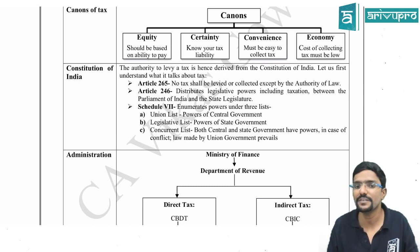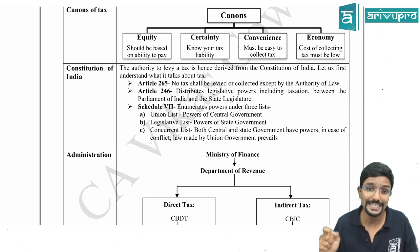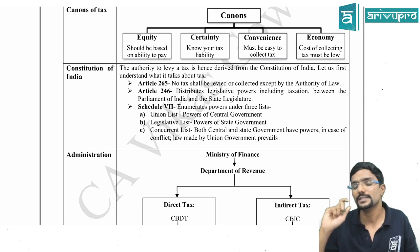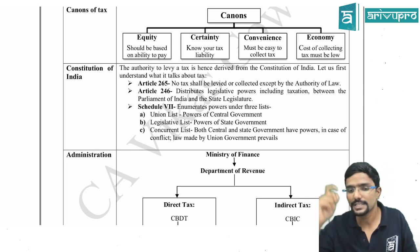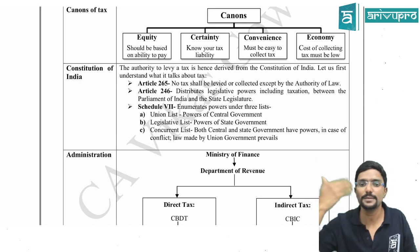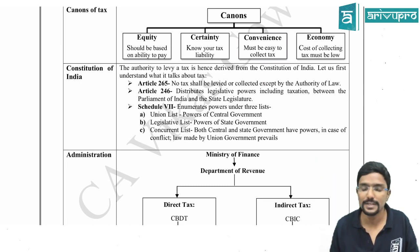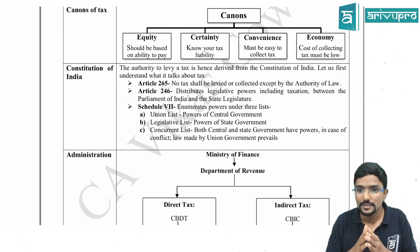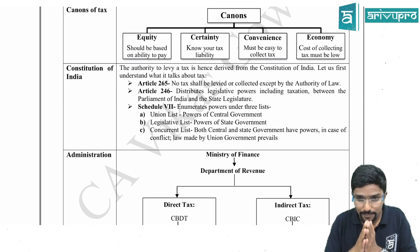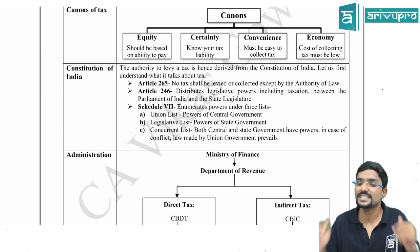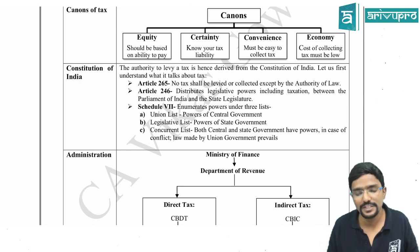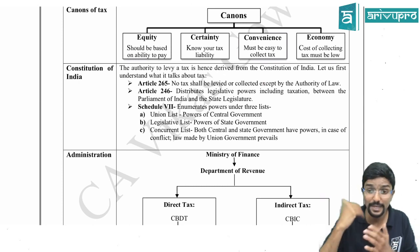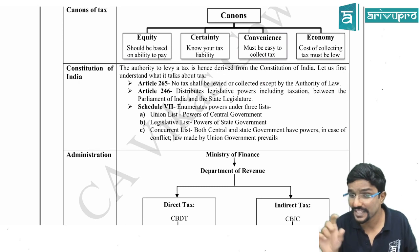Schedule 7 enumerates three lists: the Union List, the State List (also called the Legislative List), and the Concurrent List. The Union List lists the taxes which can be levied by the central government. The State List gives the taxes which can be collected by the state government. The Concurrent List gives the power to both central and state governments to collect those taxes simultaneously.